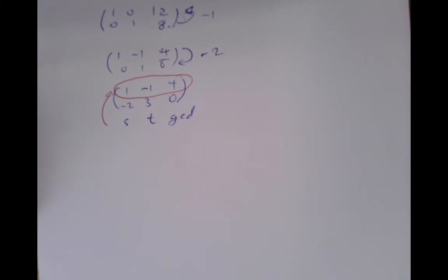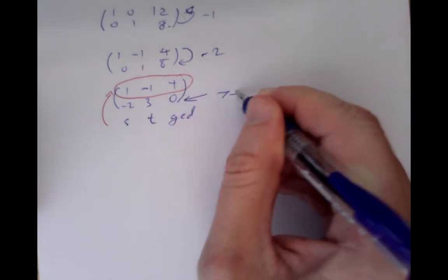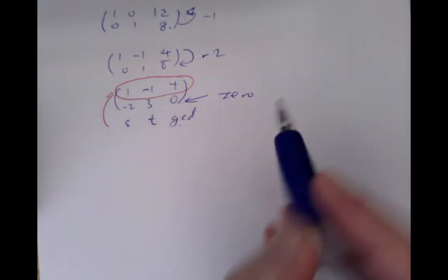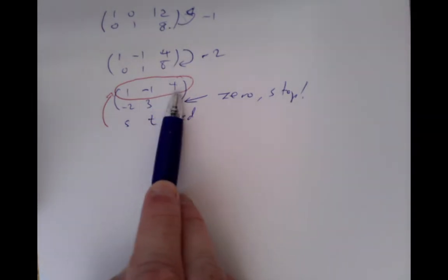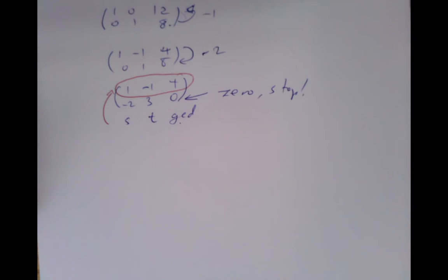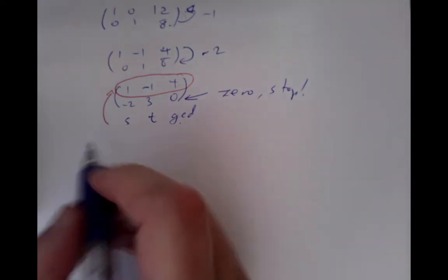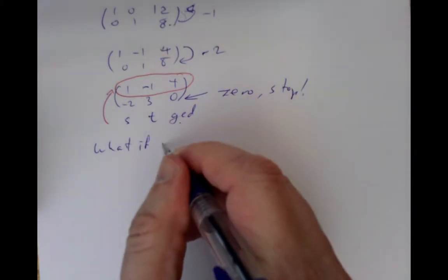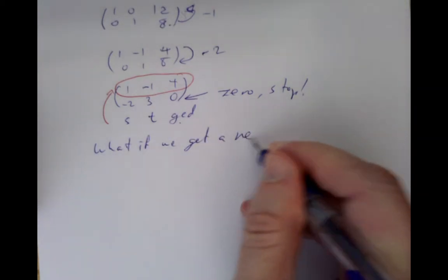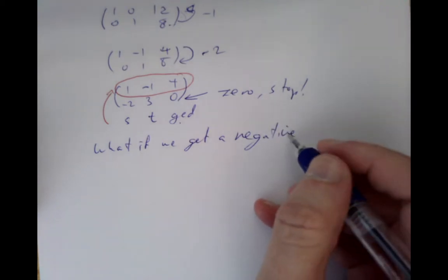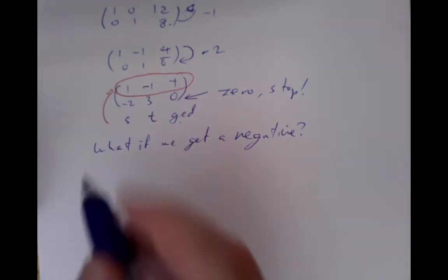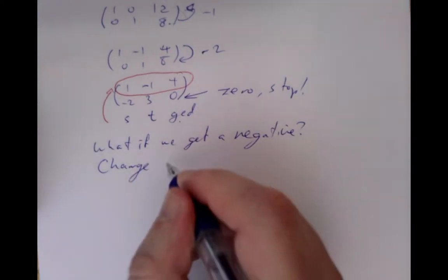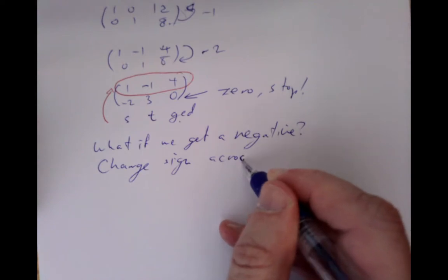You stop because you find a 0 in one of these two entries. The non-zero one is the GCD, and those are the Bezout coefficients. There is a tiny issue: what if we get a negative? If instead of that 4 we got a negative number, you just change the sign across the whole row — allow ourselves the possibility to flip the sign across the whole row.